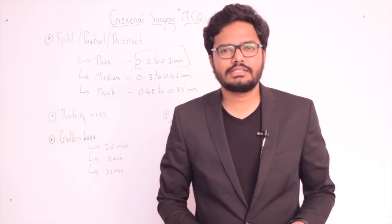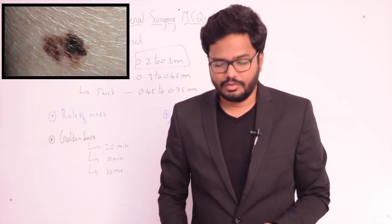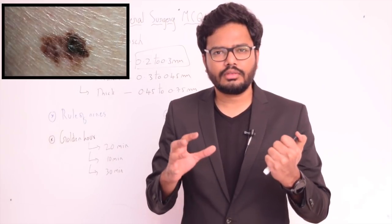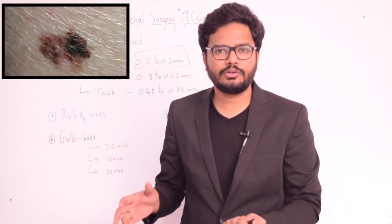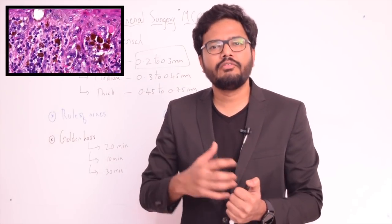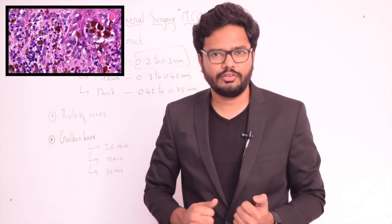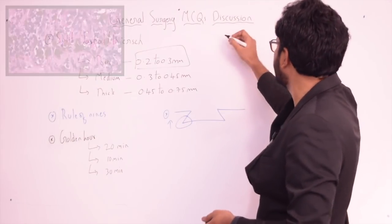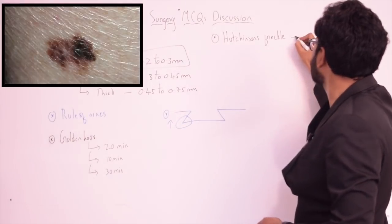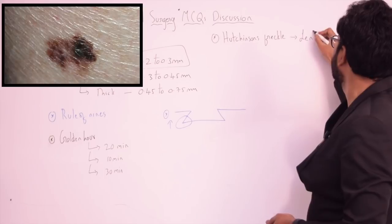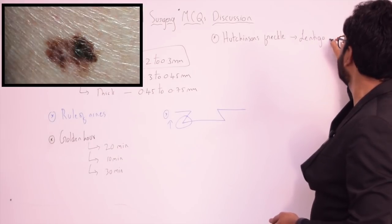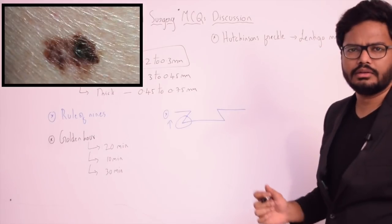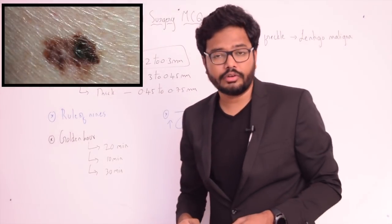Hutchinson's freckle is nothing but lentigo maligna, or melanoma in situ, where malignant cells are present without invading the underlying tissues.